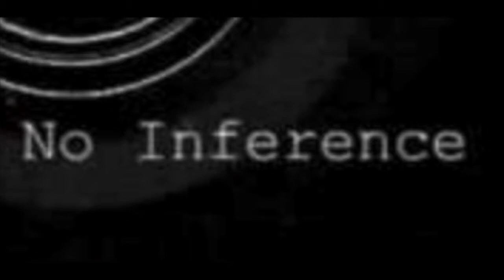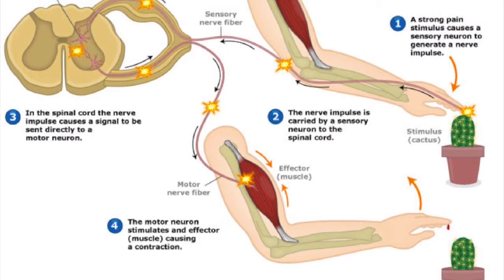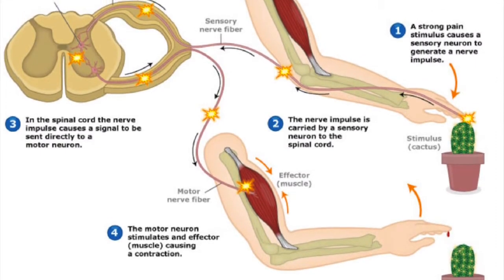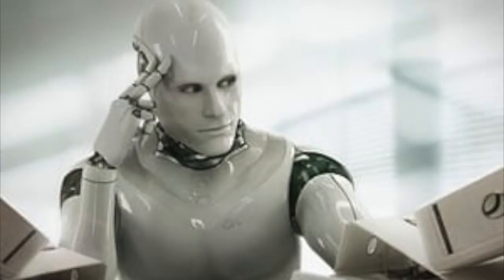For example, recoiling from a hot stove is a reflex action that is usually more successful than a slower action taken after careful deliberation. All the skills needed for the Turing test also allow an agent to act rationally.